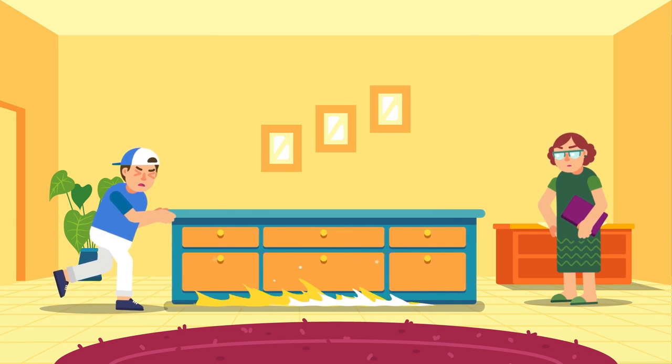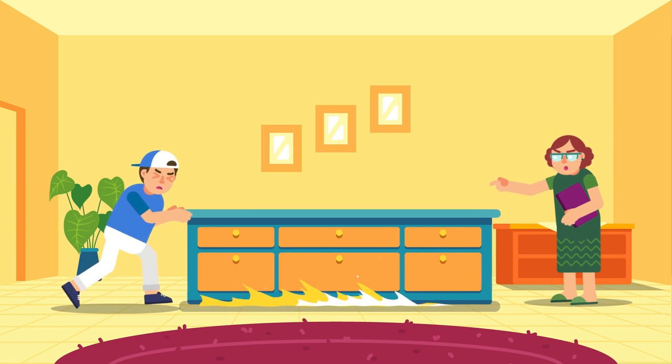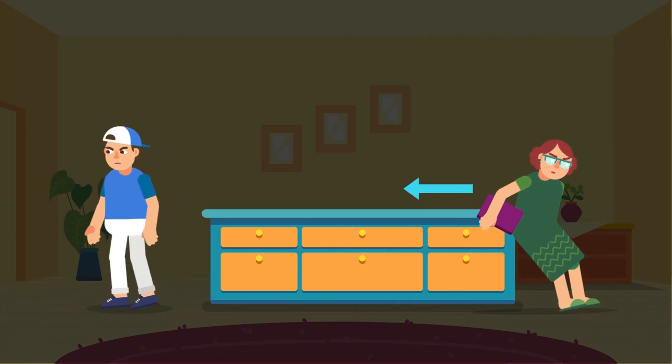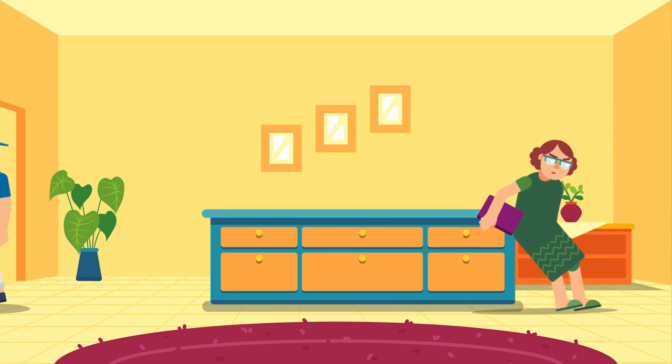If the applied force is removed, friction will cause the movement of the table to slow down and eventually stop it. If the pushing force is smaller than the friction, the table will not move at all.